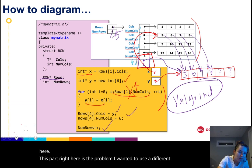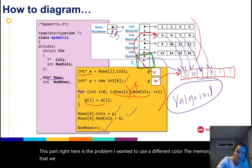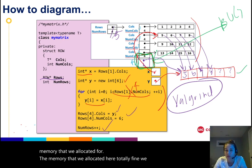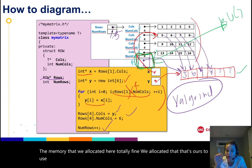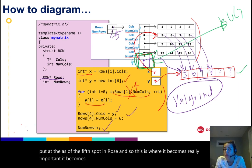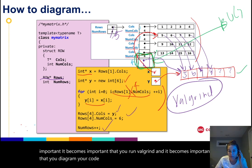The memory that we allocated here, totally fine. We allocated that. That's ours to use. But we didn't allocate memory for that pointer or for that num cols that we put as the fifth spot in rows. And so this is where it becomes really important. It becomes important that you run valgrind and it becomes important that you diagram your code. It's really hard to spot memory errors.